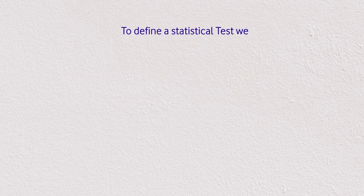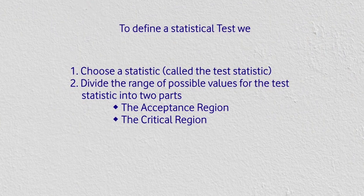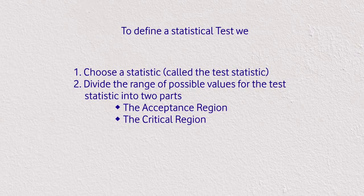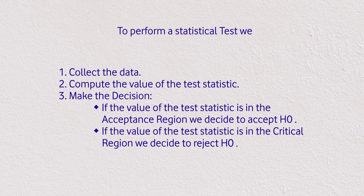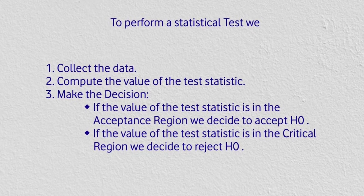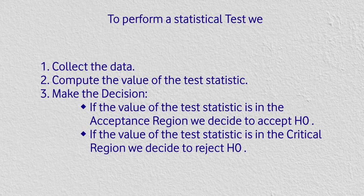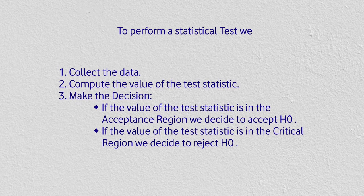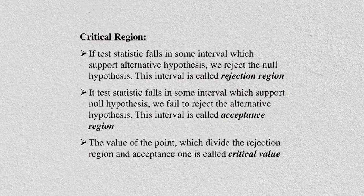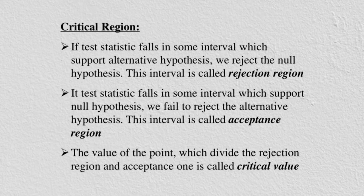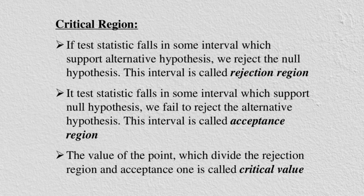To define a statistical test, we choose a test statistic and divide its range of possible values into two parts: the acceptance region and the critical region. We collect data, compute the value of the test statistic, and make a decision. If the test statistic falls in the acceptance region, we accept H₀; if it falls in the critical region, we reject H₀. The interval that supports the alternative hypothesis is called the rejection region.